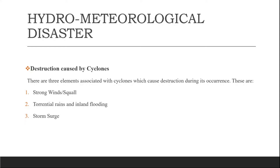The third element is storm surge. A storm surge can be defined as the abnormal rise of sea level near the coast caused by a severe tropical cyclone, as a result of which seawater inundates low-lying coastal regions, drowning human beings and livestock, eroding beaches and embankments, destroying vegetation, and leading to a reduction in soil fertility.